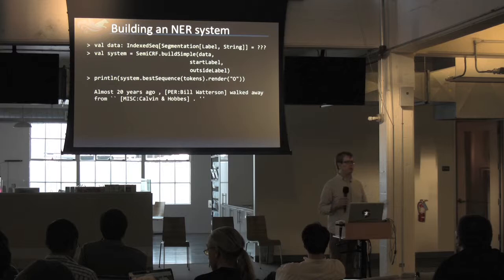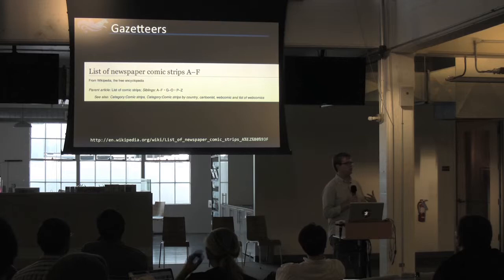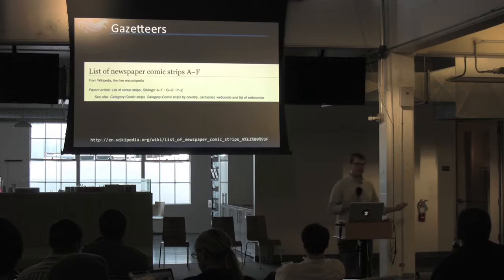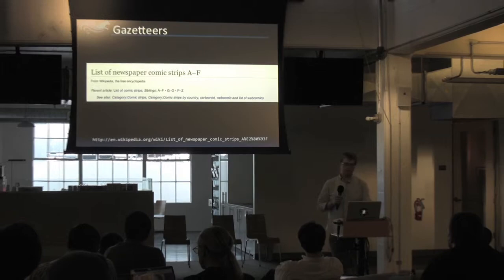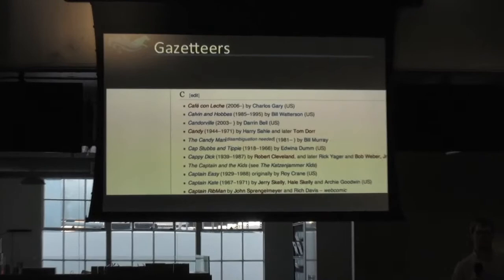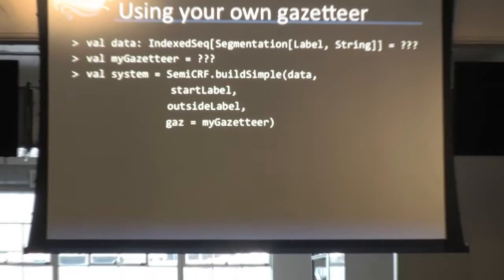If you don't want to annotate a bunch of data, maybe because you don't have the budget or just don't feel like it, you could instead use what's called a gazetteer. A gazetteer is a list of entities pre-built from some database. Wikipedia is a great source — one article is a list of newspaper comic strips from A to F, and sure enough Calvin and Hobbes is right there. You can build a regex extraction and pass the gazetteer to the semi-CRF model to get the right answer.